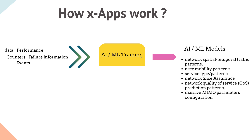Some example models include network spatial-temporal traffic patterns, user mobility patterns, service patterns along with corresponding predictions, network quality of service prediction patterns, massive MIMO parameter configurations, and more — all of which can be reused, abstracted, or learned.